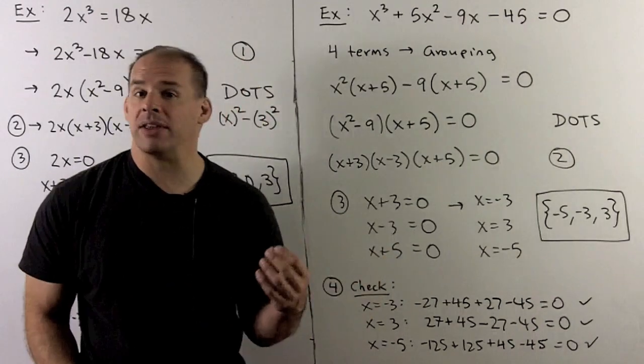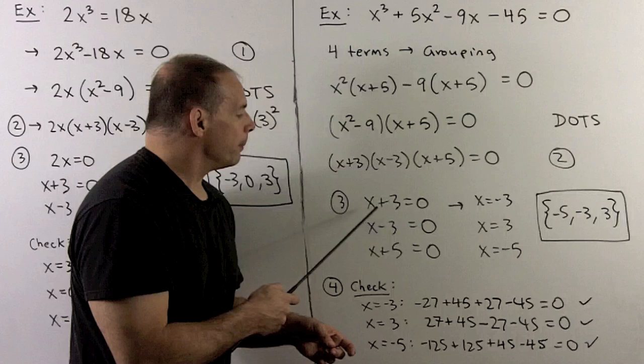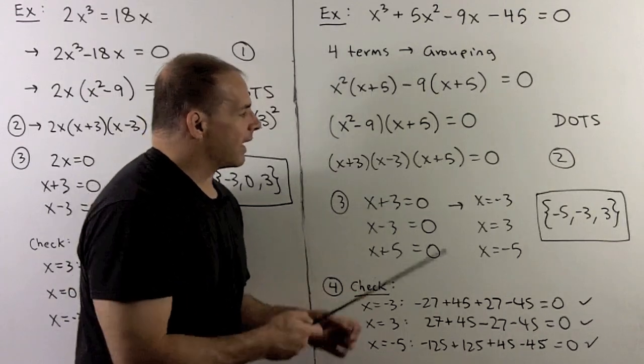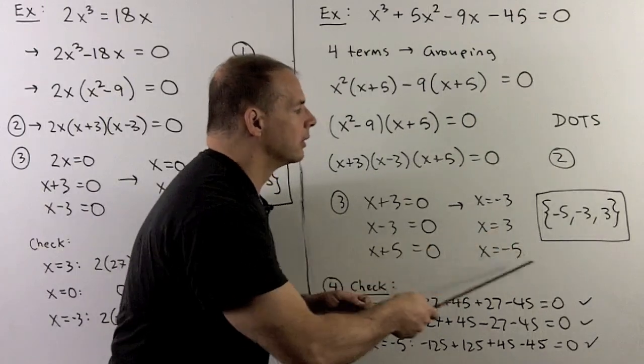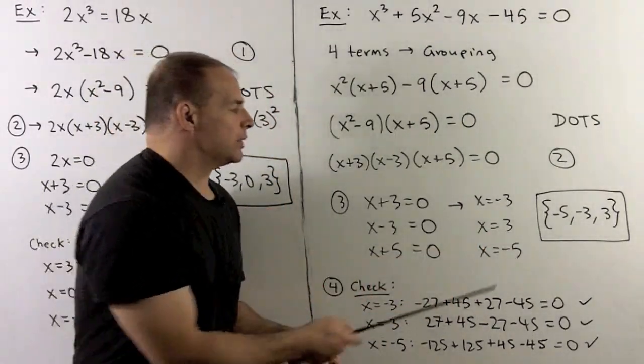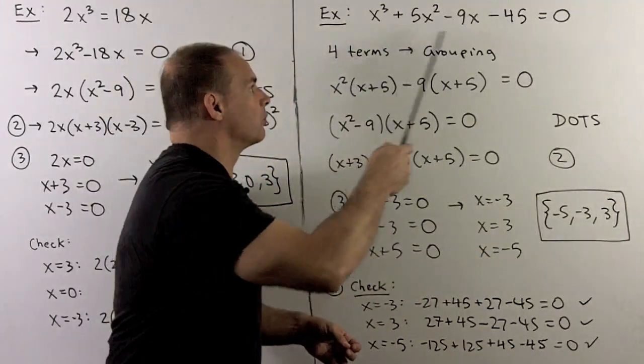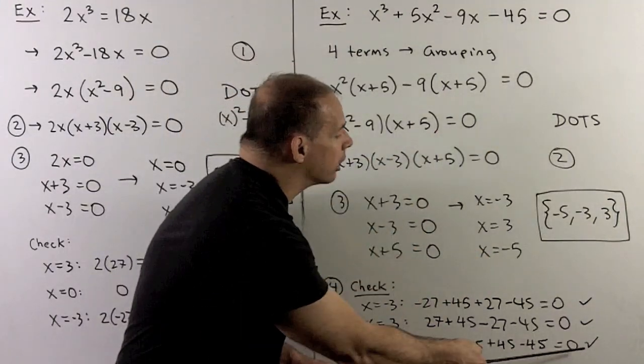So now I can apply the zero product rule. Take each factor and set it equal to zero. That gives for solutions a minus 3, a 3, and a minus 5. Now, to finish as usual, we check our work. So we take each of these solutions, put them in the original equation, and we note they will all work.